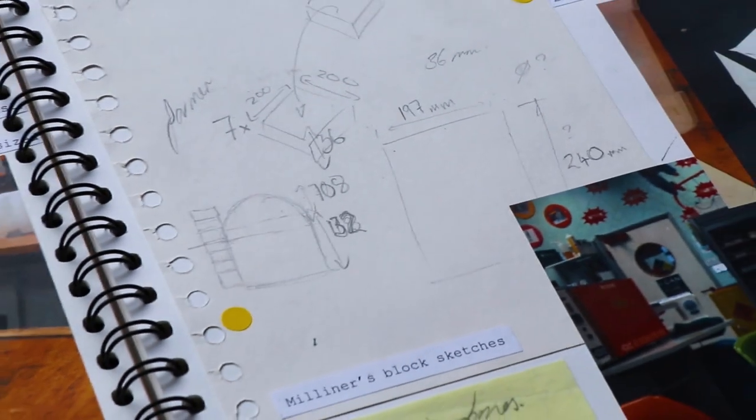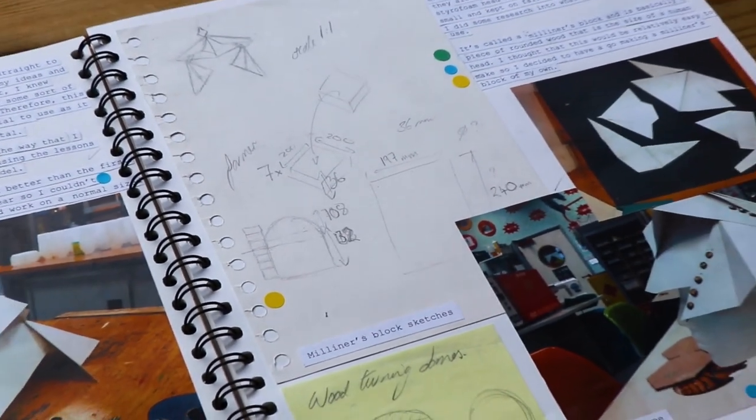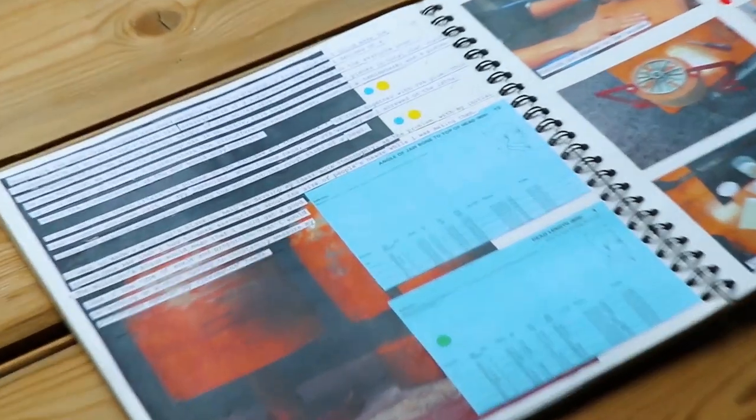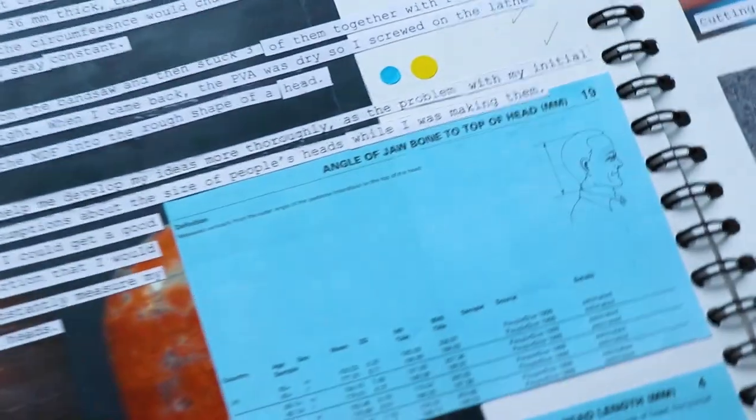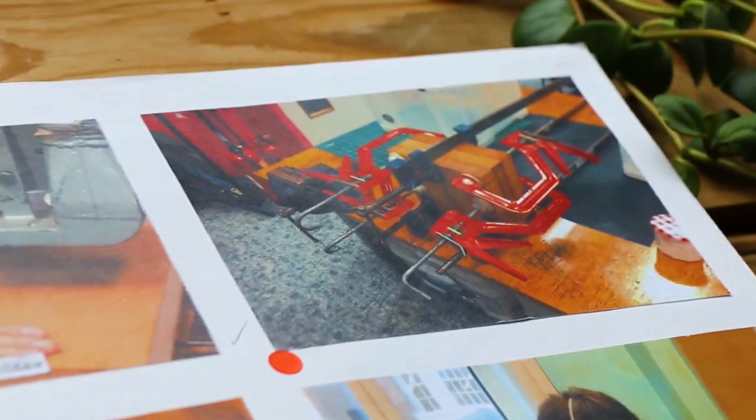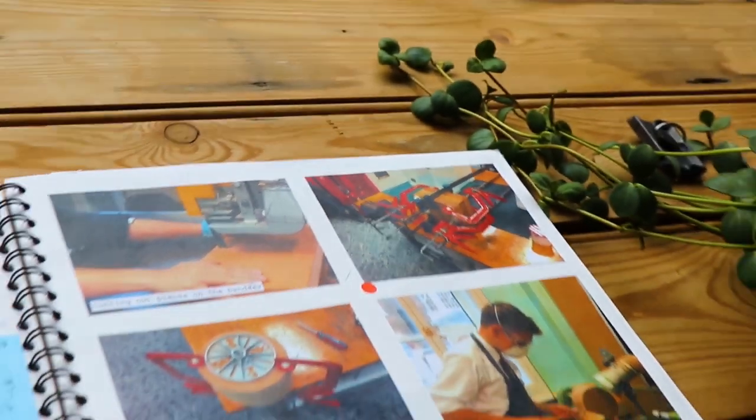So I don't know if any of you guys have ever done professional hat making, probably not, but there's this thing called a milliner's block which hat makers use to shape hats on, and we didn't have one at my school because I don't know what kind of school would stock a milliner's block in their product design department. So I had to make one myself.